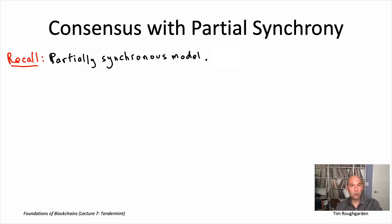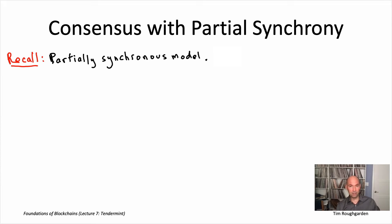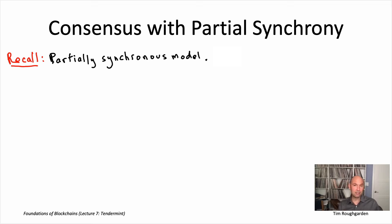That was the famous FLP impossibility result. So that led us to our third and final model of communication we're going to study: partial synchrony. The goal here is to think about how a protocol operates both when under attack and under normal operating conditions. We're going to identify normal operating conditions with the synchronous model, and we're studying the minimal model that captures all of that.